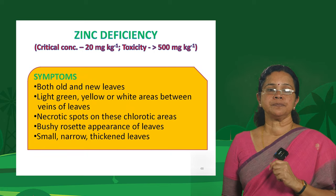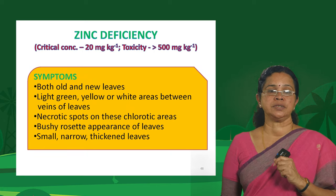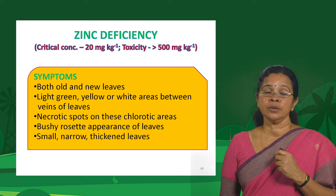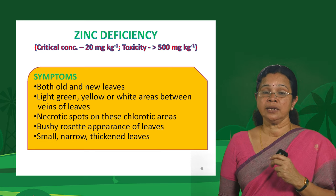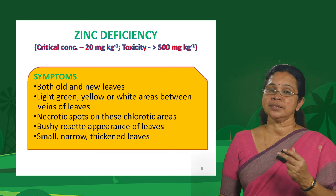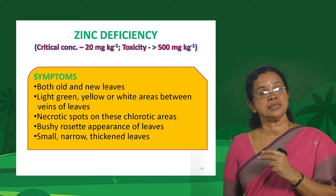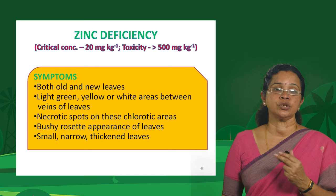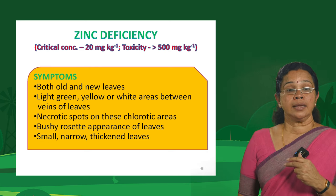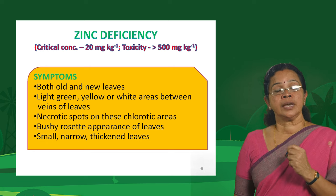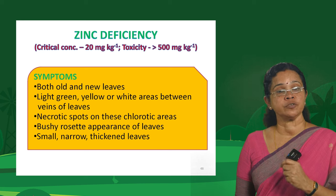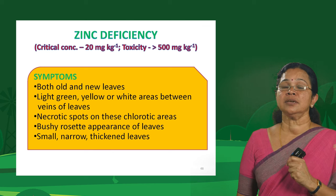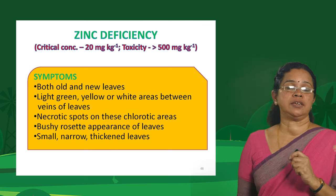Coming to zinc deficiency — causes include high soil pH, usually from excessive liming applied to alleviate acidity. Excessive presence of phosphorus, iron, calcium, magnesium, copper and manganese can affect the availability of zinc leading to zinc deficiency symptoms through antagonistic interactions.